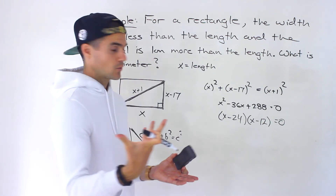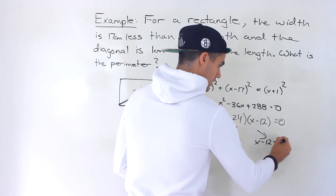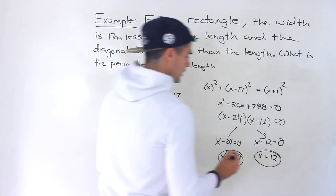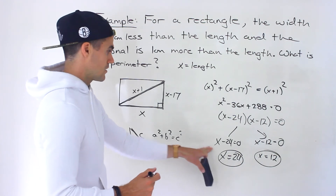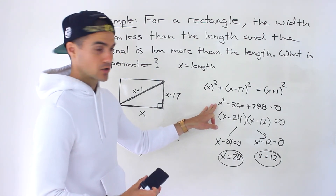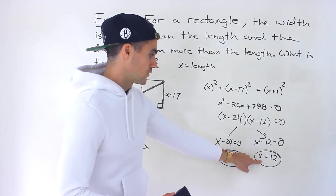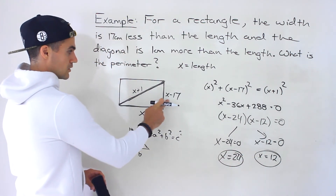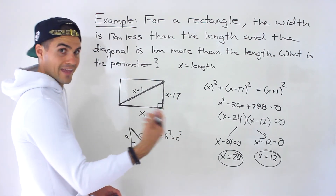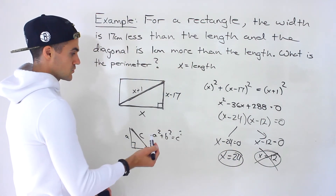We're solving an equation, so we find the x values: x minus 24 equals 0 gives x equals 24, and x minus 12 equals 0 gives x equals 12. But we have to plug these back into our word problem. An x value of 12 is not admissible because the width would be 12 minus 17, which is negative 5 — and we can't have a negative width. So x equals 24 is the valid solution.